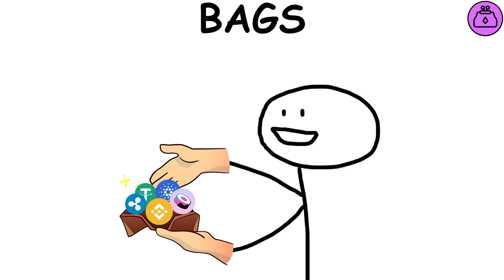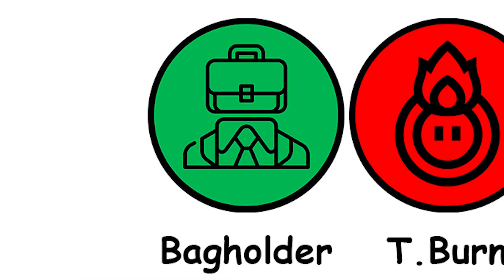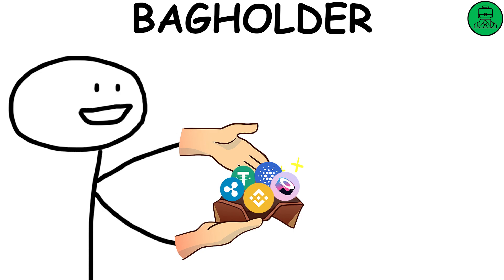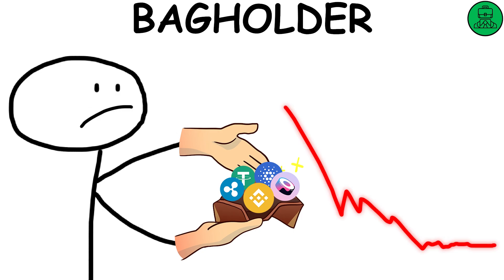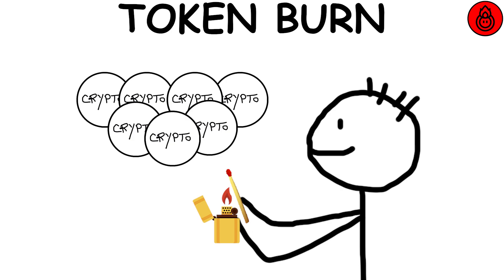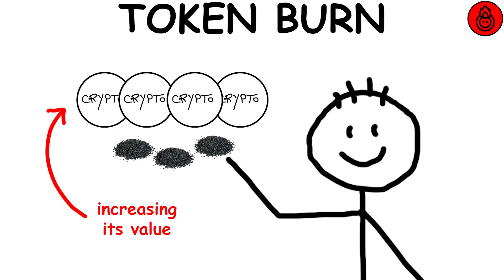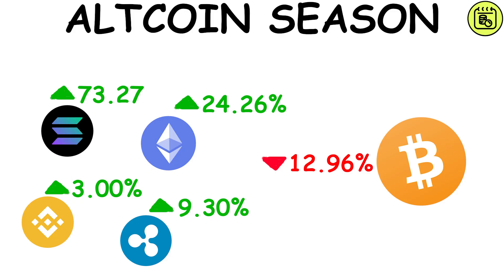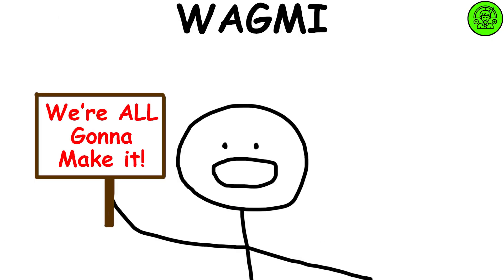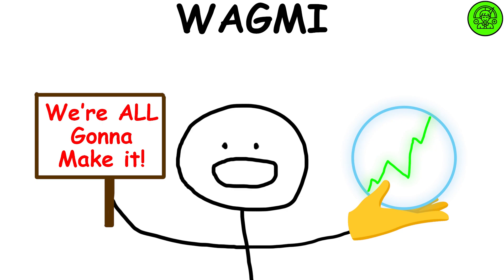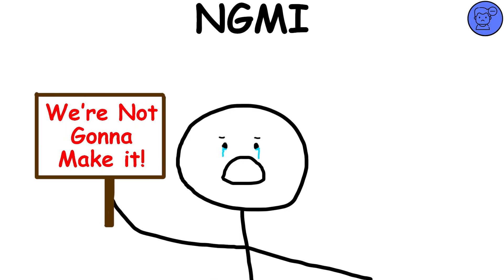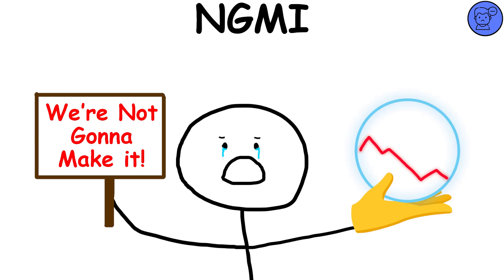Bags: it refers to the collection of coins and tokens in the wallet. Bag holder: a bag holder is someone who keeps a certain cryptocurrency in their wallet, even if the price drops to zero. Token burn: it is when a certain number of tokens are intentionally destroyed, reducing the total quantity in circulation and managing the price by limiting the supply. Altcoin season: it is a period when altcoins outperform Bitcoin in terms of market performance. WAGMI: an acronym for we're all gonna make it — a positive and encouraging message about future gains. NGMI: an acronym for not gonna make it — used as a prediction of future failure.